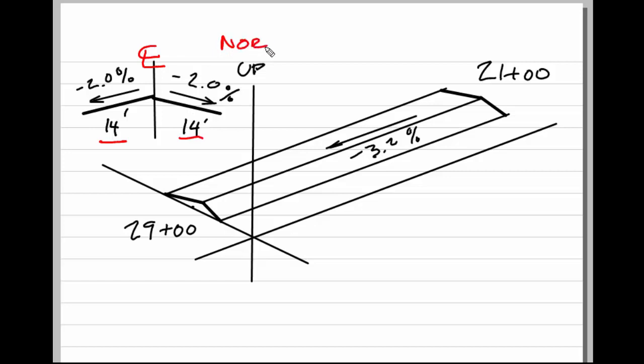Normal crown means that the center line of the road is a ridge. It is the high point along the road and both lanes drain away from the center line. So here you can see we have a slope of 2%, a negative 2% on one side and a negative 2% on the other side, going from the center line out toward the edges of pavement.